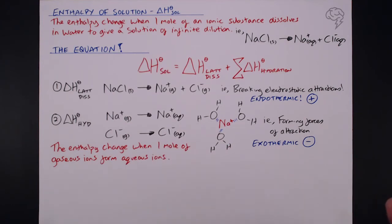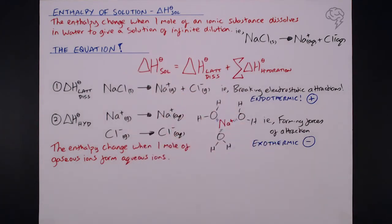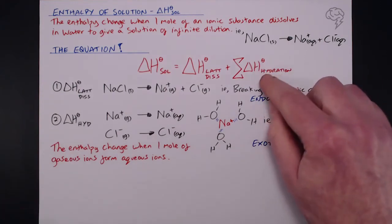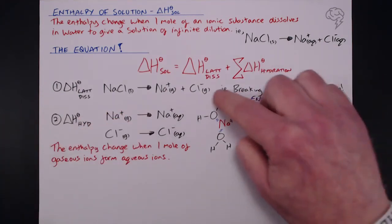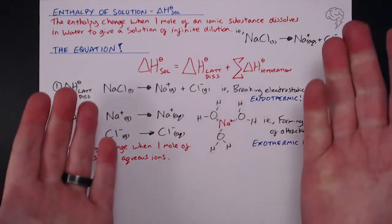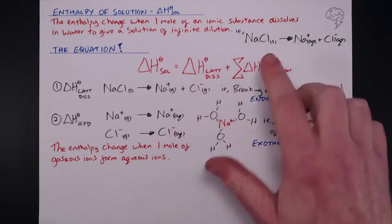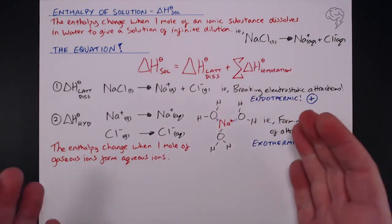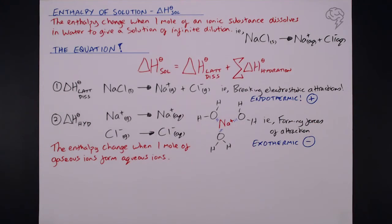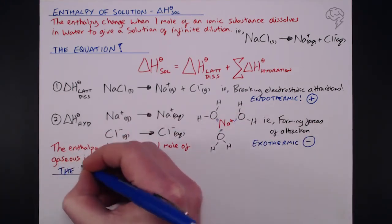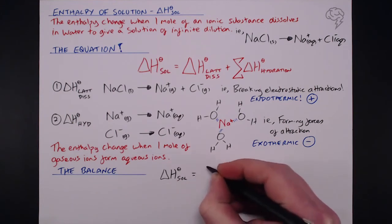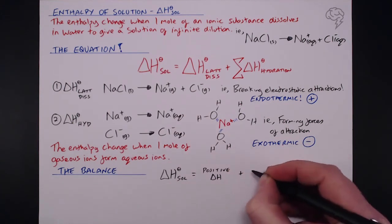So let's stock take here. What we've got is a balance. When we look at the overall enthalpy change of solution, when anything dissolves, it's a balance between the endothermic process of breaking the lattice and the exothermic process of the water molecules arranging around the ions, both positive and negative. So it's a balance here. If this is a greater value than this, we're going to end up with a positive value. If this is greater than this, we're going to end up with a negative value. So delta H solution can be either positive or negative. It's all about a balance.